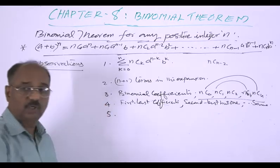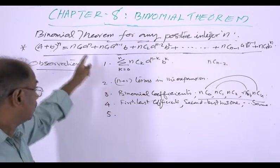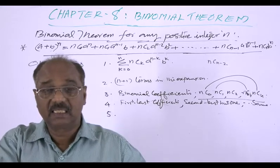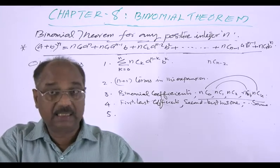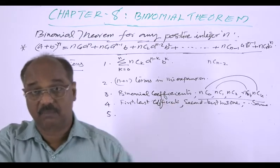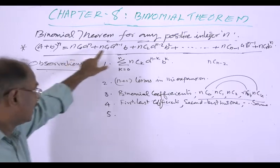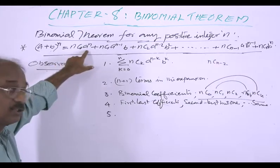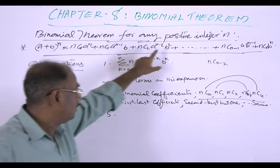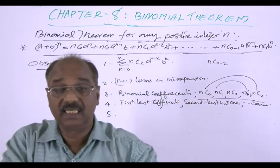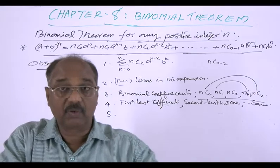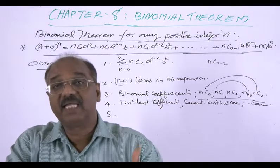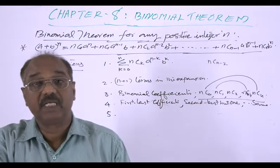The fifth observation: as we advance from left to right, the power of A is reduced by 1 and the power of B is increased by 1. So the power of A goes n, n−1, n−2, and so on, while the power of B goes 0, 1, 2, and so on. This is the way in which terms advance from left to right.